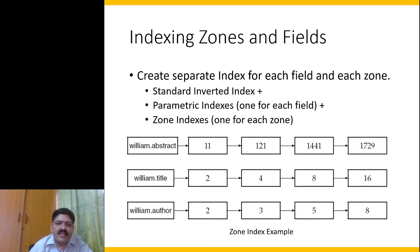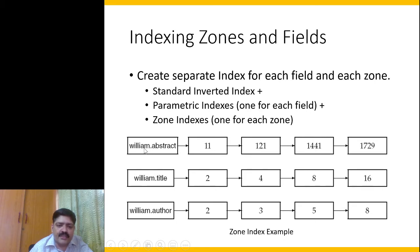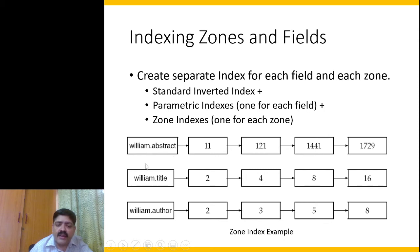How do we index zones and fields? One option is to create a separate index for each field and each zone. For example, for the term 'William' we maintain multiple lists — one for abstract and one for title. This says document IDs 248 and 16 had 'William' in the title, and similarly for each zone. This is what we call a zonal index — we keep a zonal index for each zone we want.